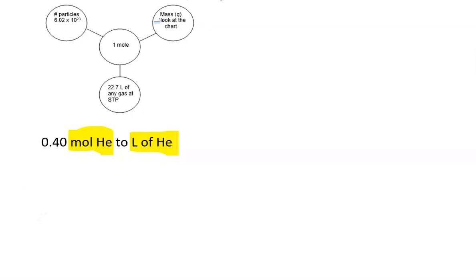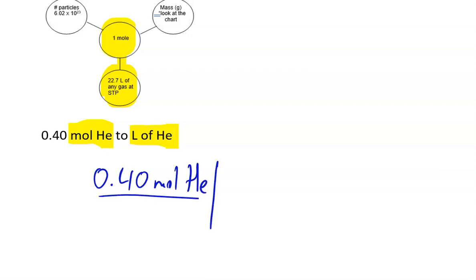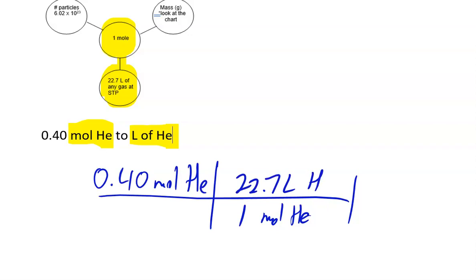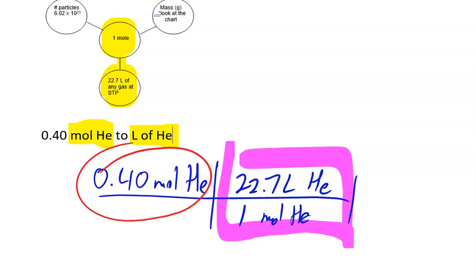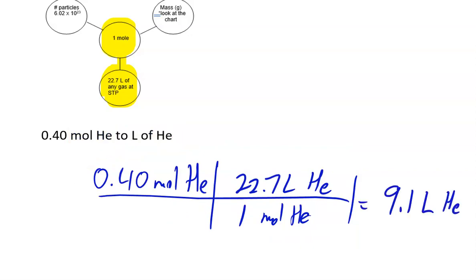Starting with moles going to liters, that's one conversion. Start with what you have: 0.4 moles of helium. Put moles on top, moles on bottom, then one mole equals 22.7 liters of helium. It doesn't matter what number you start with — these ratios stay the same. The answer rounded to two sig figs is 9.1 liters of helium.